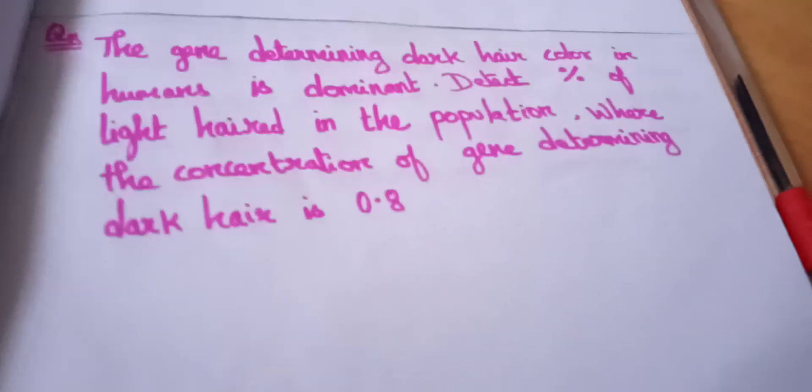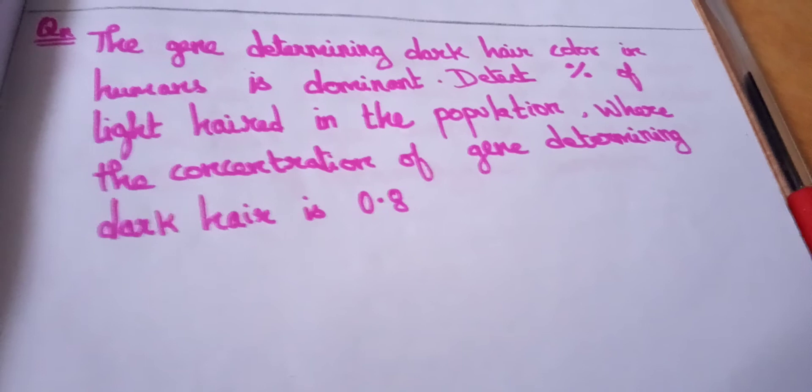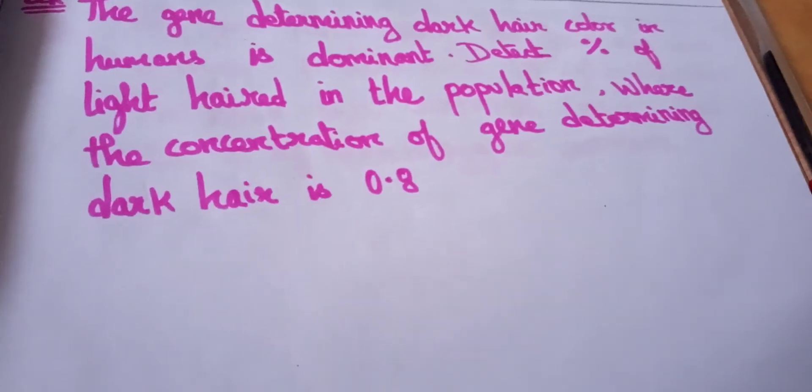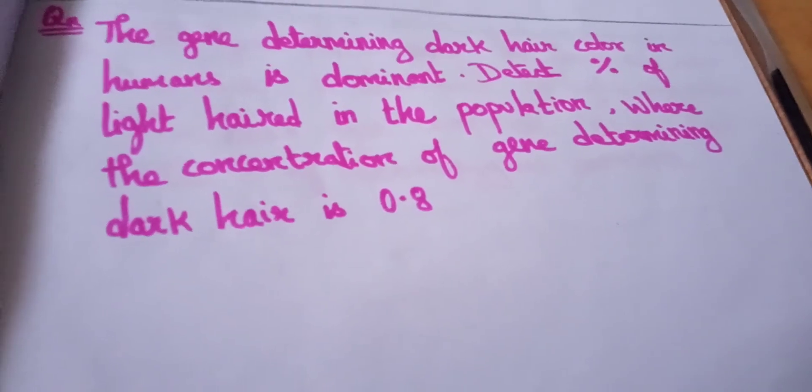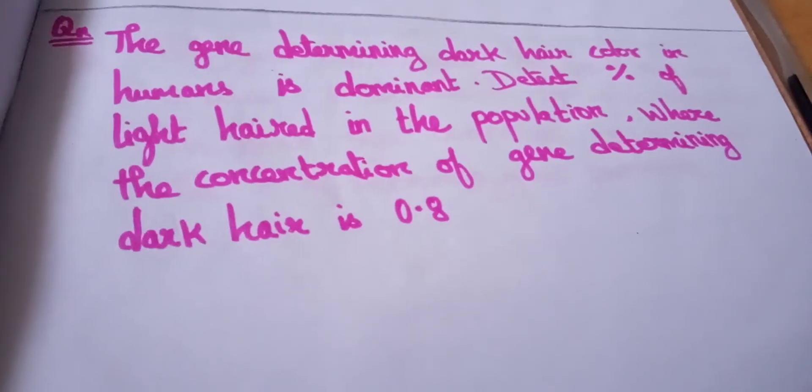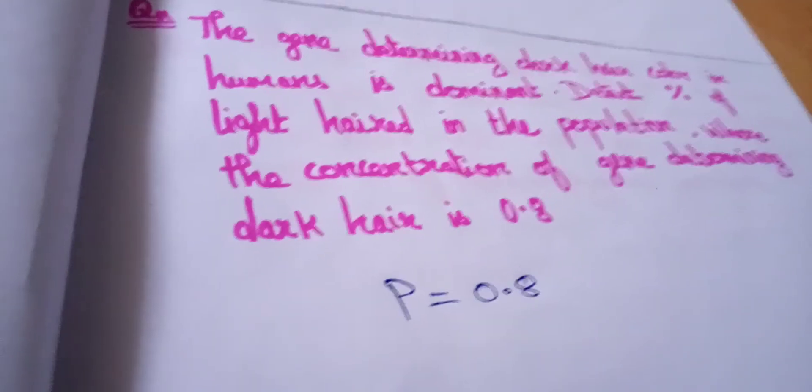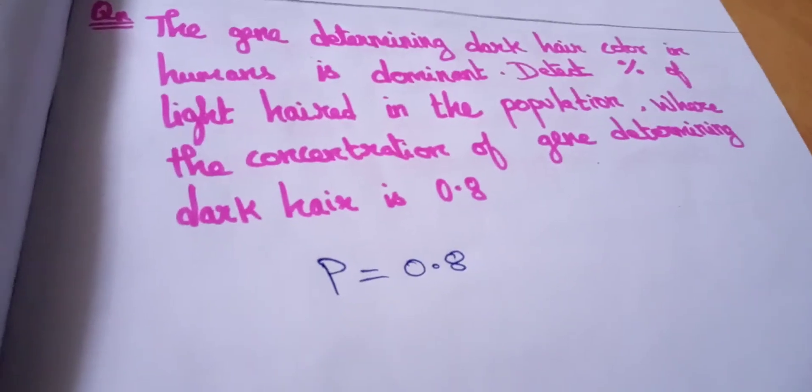Let's move on to the next question. The gene determining dark hair color in humans is dominant. Detect percentage of light hair in the population where the concentration of gene determining dark hair is 0.8. This is the same as the previous question. Concentration of gene. If P is 0.8, our Q is 0.2.